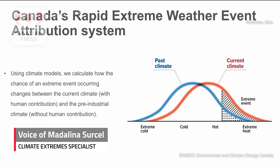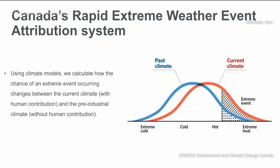The Canadian Rapid Event Attribution System determines how the frequency of extreme weather has shifted over the last 150 years because of human activity. This is done by using climate model data to calculate how the chance of occurrence of an extreme event in today's climate, with the influence of human activity, compares to the chances of this event happening in the pre-industrial climate, before human-caused climate change.